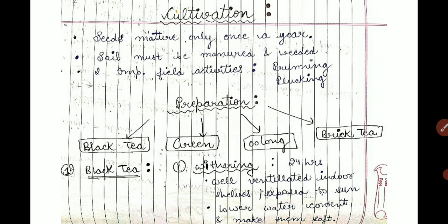Now let's look at tea preparation. We know that green tea, black tea, oolong tea, and brick tea are available in the market. We will take a look at the preparation of each, starting with black tea.